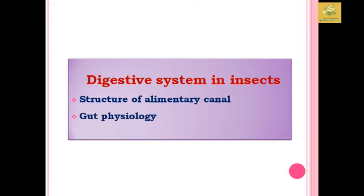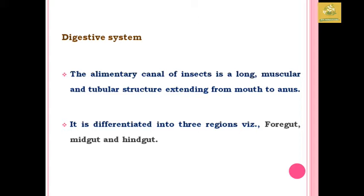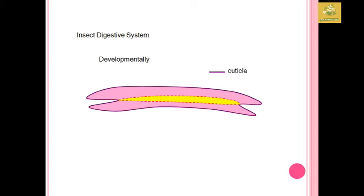In this video we are going to see the fundamentals of entomology. I am going to cover the digestive system in insects, which includes the structure of the alimentary canal as well as gut physiology. The alimentary canal of the insect is said to be the longest structure in the insect body — a muscular and tubular structure extending from mouth to anus. It is differentiated into three regions: the foregut, midgut, and hindgut.